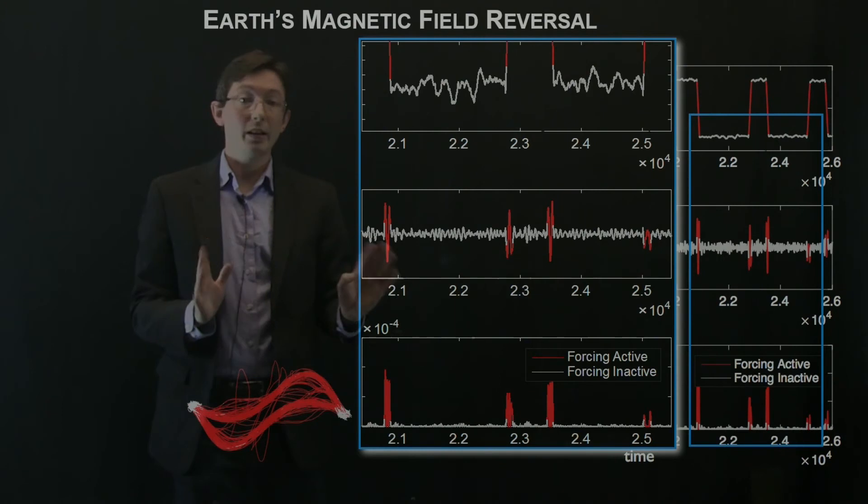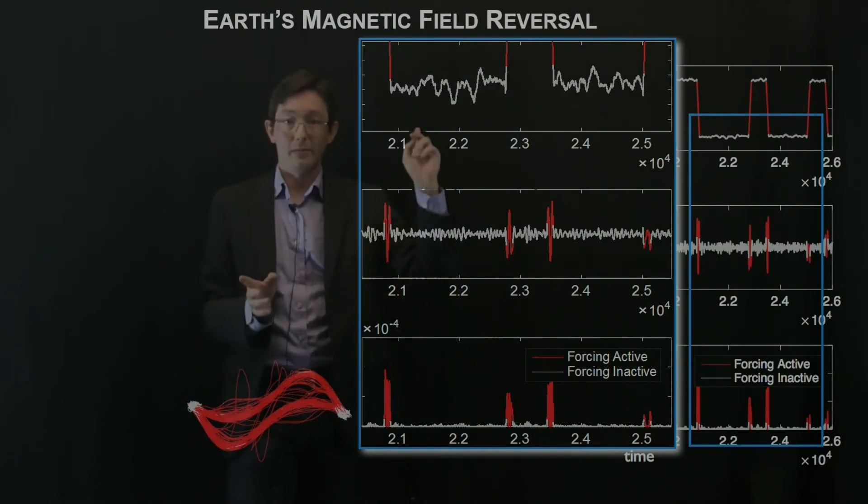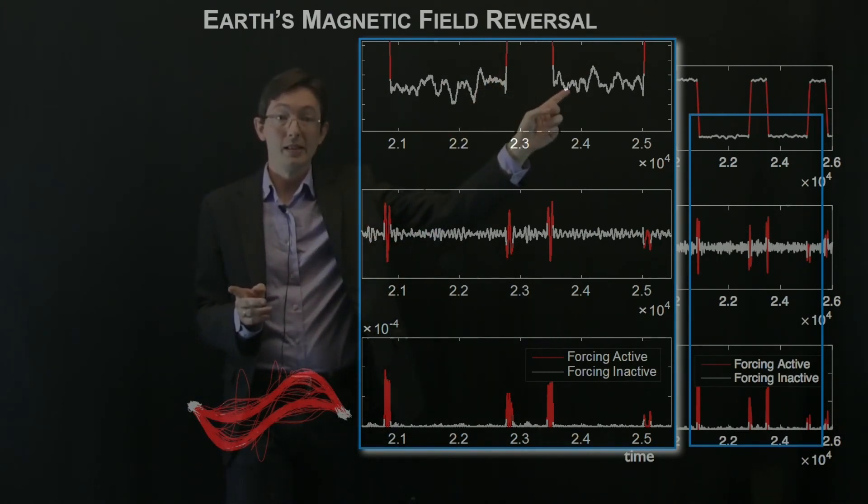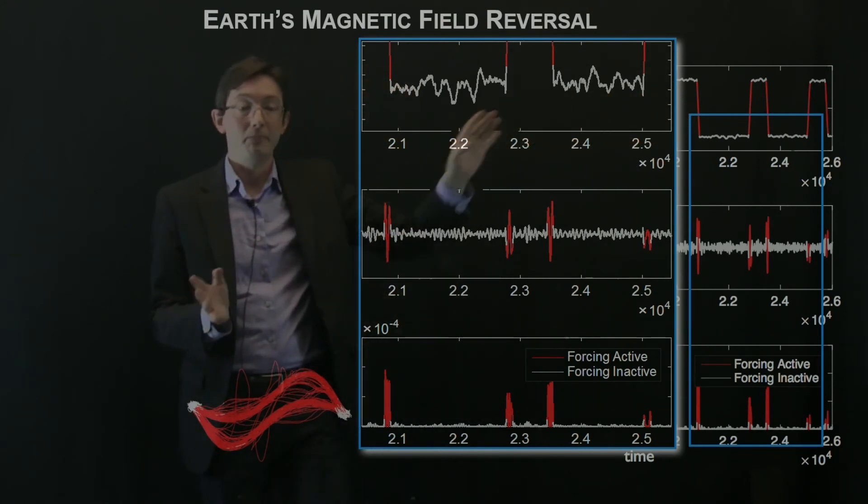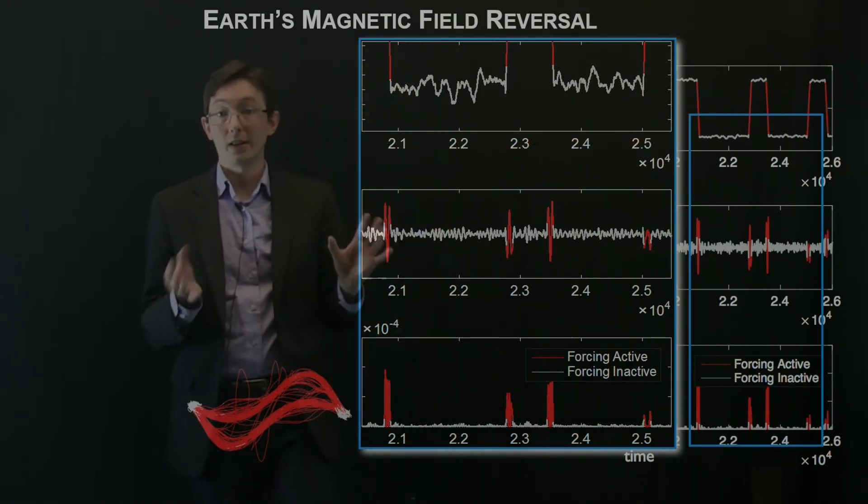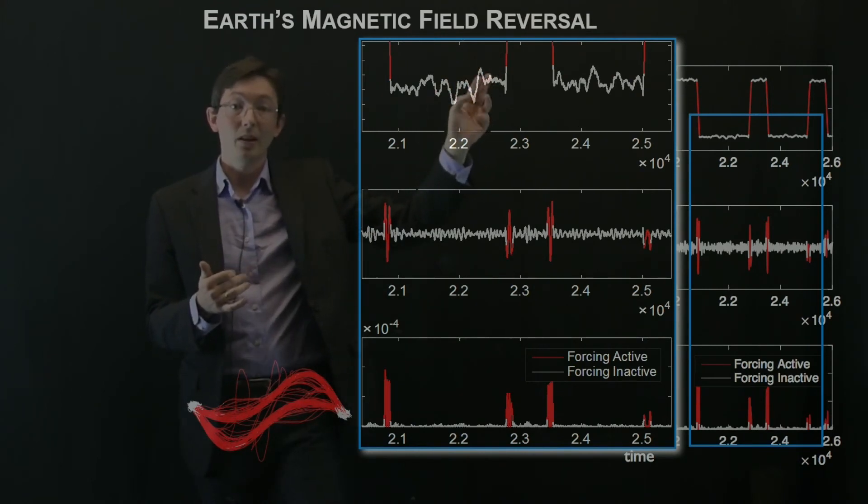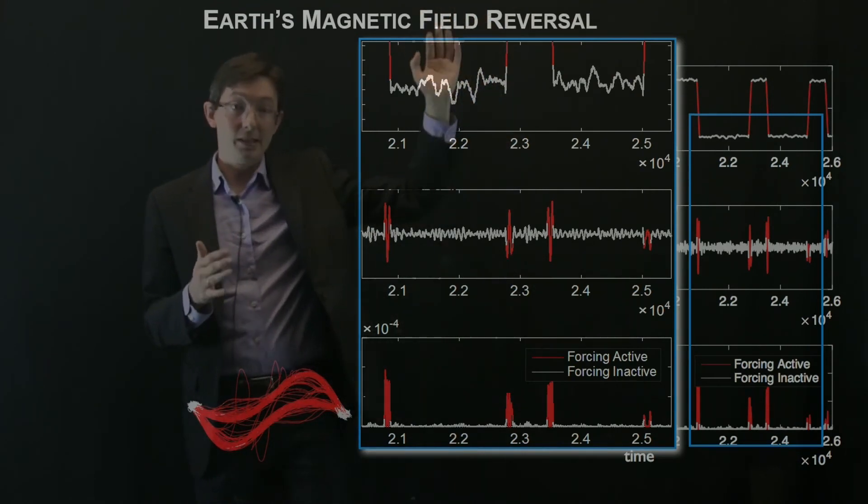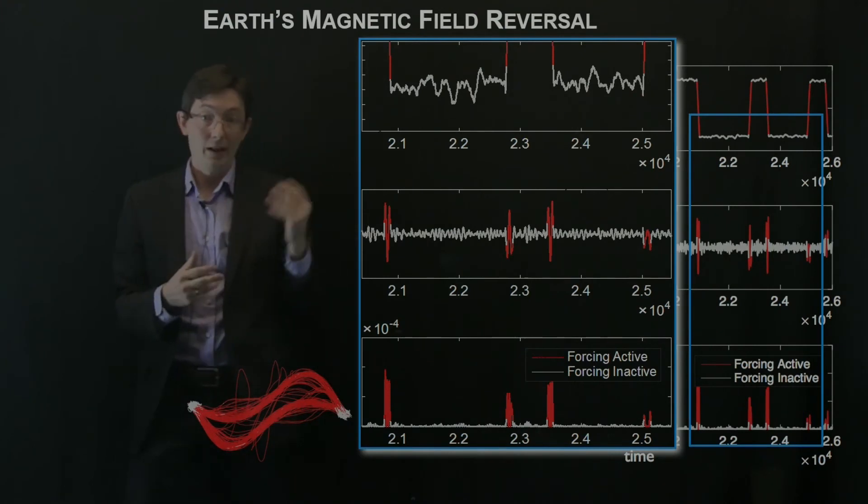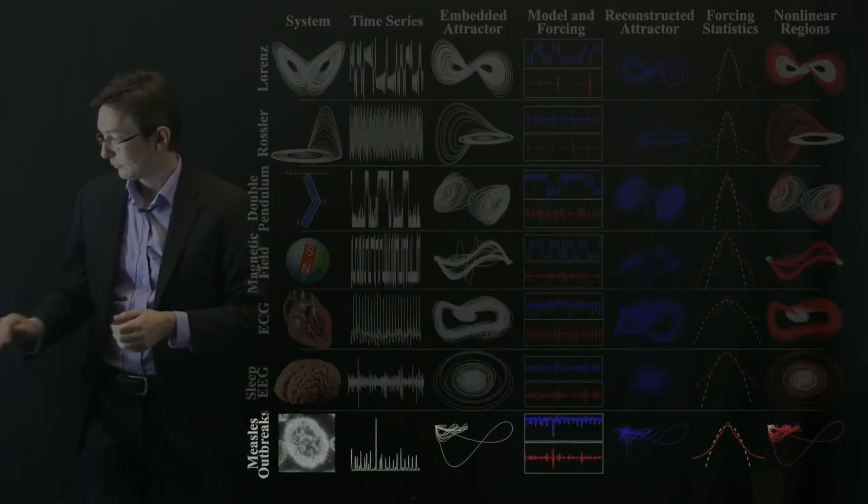But when this system is ready to switch, you get a jump in this external forcing clear as day, this very big signature that says the system is about to switch. And it's pretty good at predicting. It's not a hundred percent, but it is pretty good at predicting when the system is about to switch. This forcing turns on. And you can see from the zoom in that it's actually quite predictive. You're getting a heads up that is proceeding what you might be guessing just by eyeball.